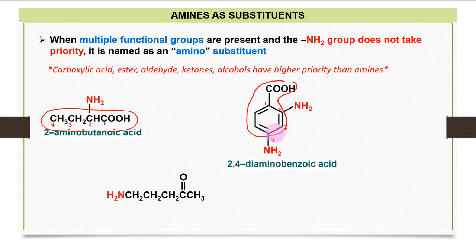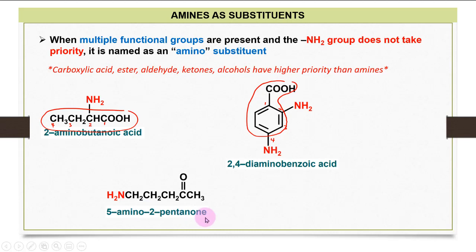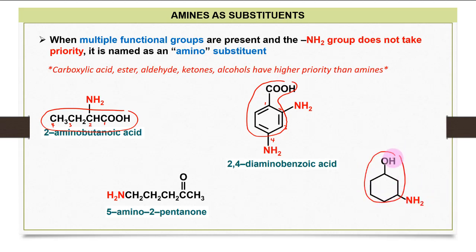For a structure with a ketone functional group in the main chain, counting five carbons, the parent is 2-pentanone, and NH2 at position five gives 5-amino-2-pentanone. For a structure with an OH group — alcohol has slightly higher priority than amino — the parent is cyclohexanol. With an amino group at position three, the name is 3-amino-cyclohexanol.